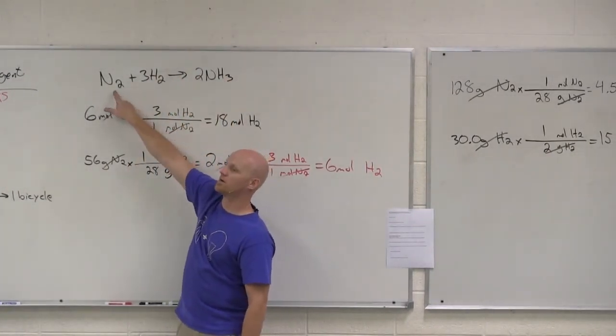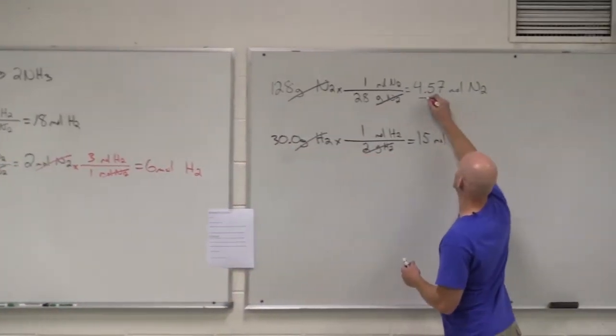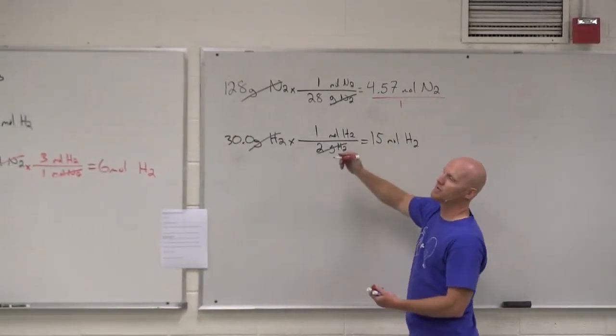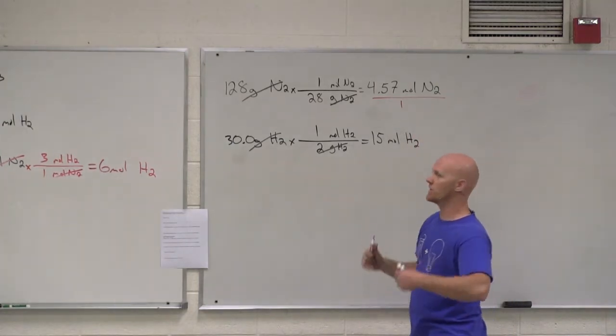So, from here, if I want to find out the limiting reagent, I want to look at both of these and figure out how many times could I possibly do this reaction as written. With N2, we're talking about one. So, if I've got 4.57 moles, how many times can I do this reaction? Well, I'll divide. It takes one every time. So, if I've got 4.57, I can do the reaction 4.57 times.